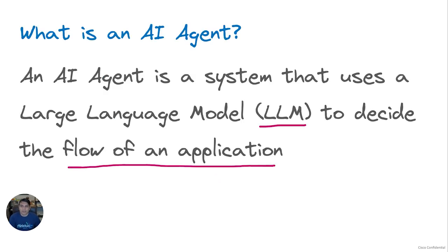What is an AI agent? An AI agent is essentially a system that leverages a large language model, also known as LLM, to decide the course of action within an agentic system. In agentic systems, LLM reasoning is pivotal to managing the flow of tasks.